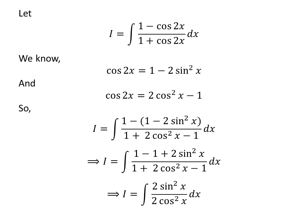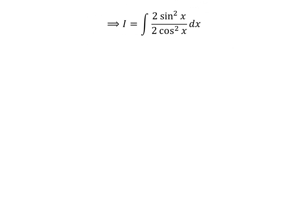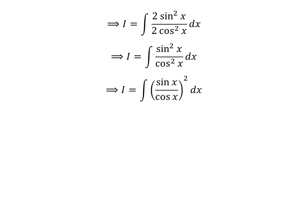We are left with the integration of (2 times square of sine of x) upon (2 times square of cosine of x) with respect to x. Cancelling the common factor of 2 in the numerator and denominator gives us I equal to the integral of square of sine of x upon square of cosine of x, which equals the integral of square of (sine of x upon cosine of x).